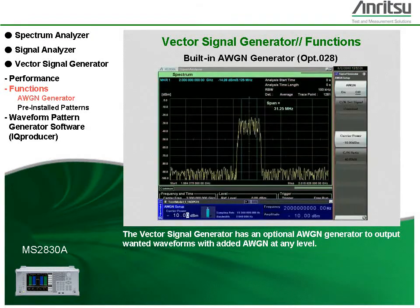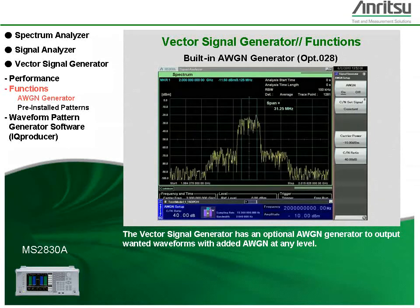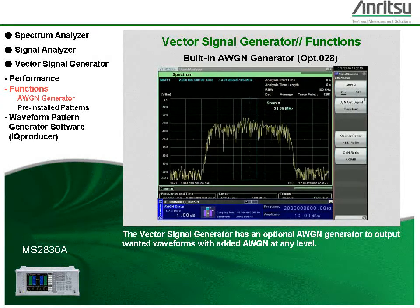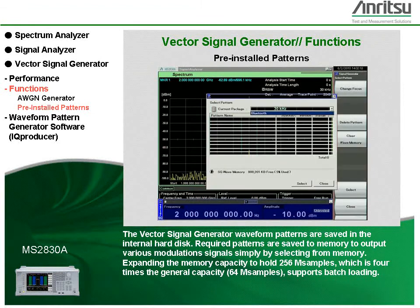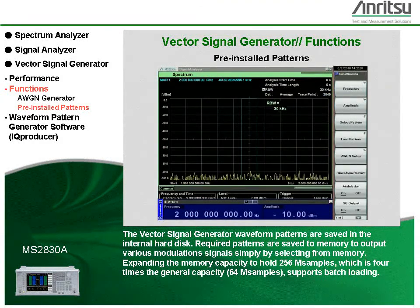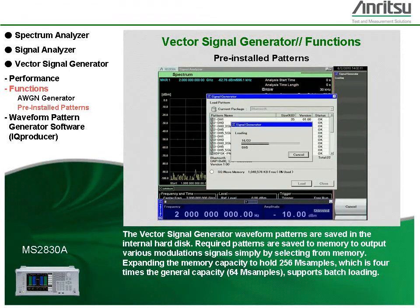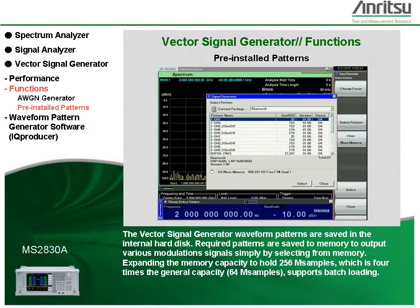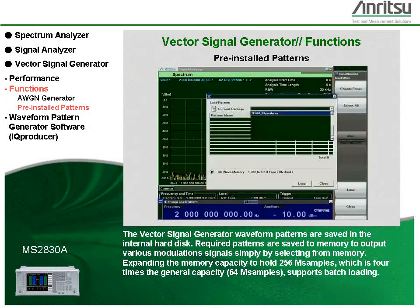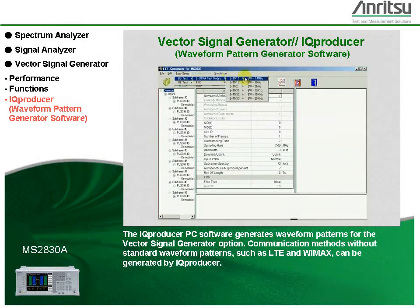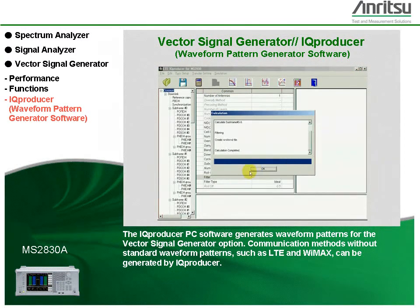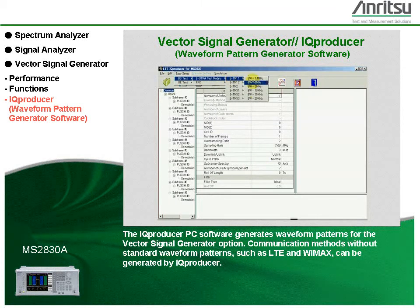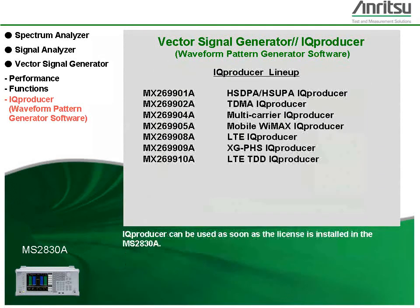The vector signal generator has an optional AWGN generator to output desired waveforms with added AWGN at any level. Waveform patterns are saved in the internal hard disk, and required patterns are saved to memory to output various modulation signals simply by selecting from memory. Expanding the memory capacity to hold 256 mega-samples, which is four times the general capacity, supports batch loading. The IQ Producer PC software generates waveform patterns for the vector signal generator option. Communication methods without standard waveform patterns, such as LTE and WiMAX, can be generated by IQ Producer, and it can be used as soon as the license is installed in the MS2830A.